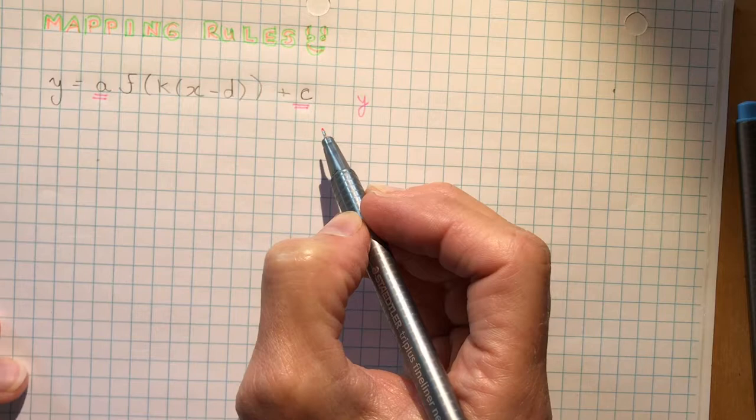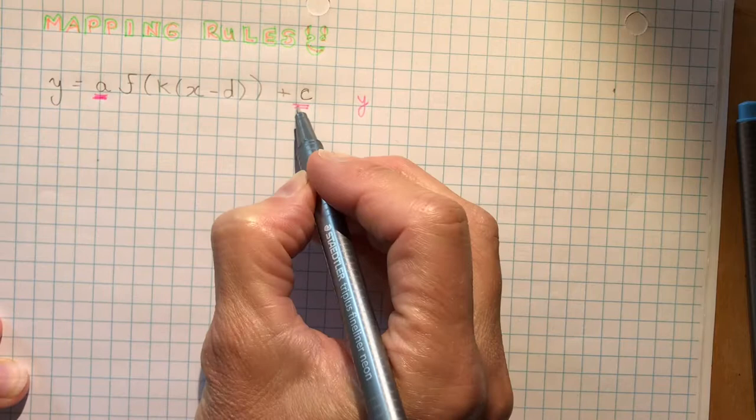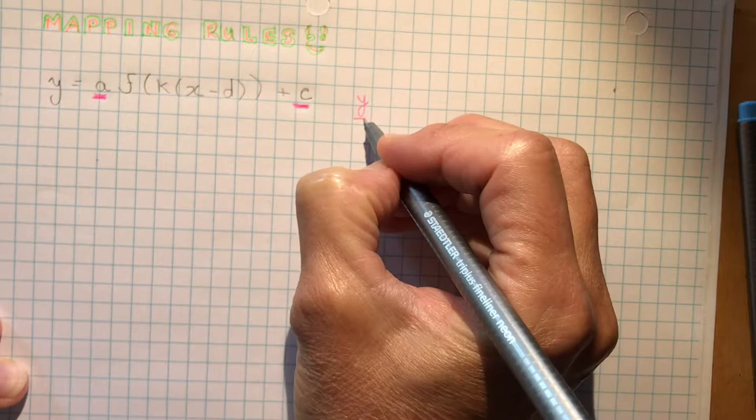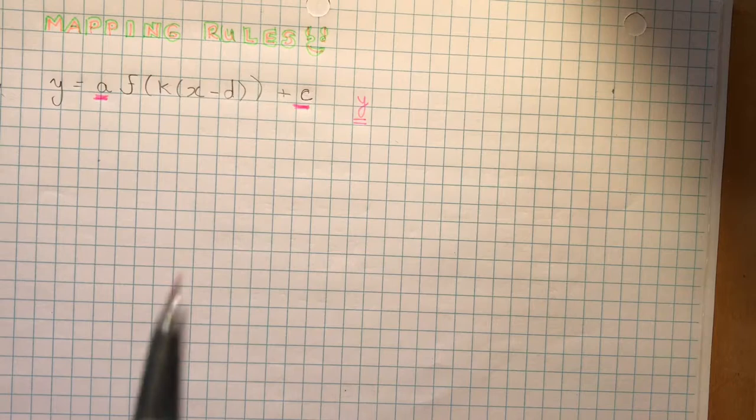So when you have it written in this format, these two letters here, the A and the C, are the only parts that affect the Y. Now remember the Y changes are outside the bracket, the X changes are inside the bracket.